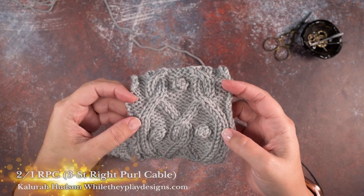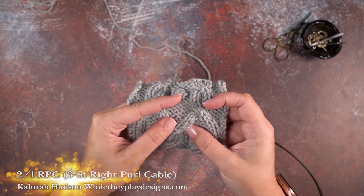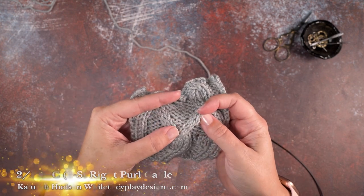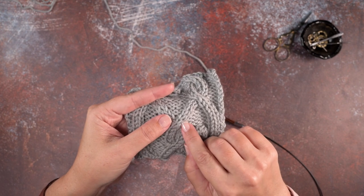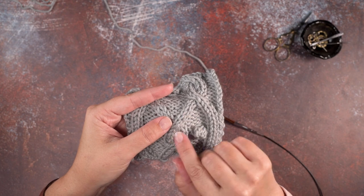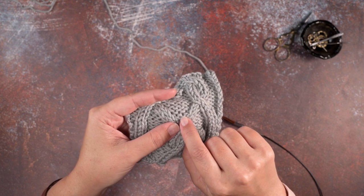Hi guys, this is Calera Hudson of Wall They Play Designs and in today's video I'm going to be showing you how to create a three stitch RPC or a two over one right leaning purl cable. If you look here we have two knit stitches of this cable crossing over the right side of one purl stitch.